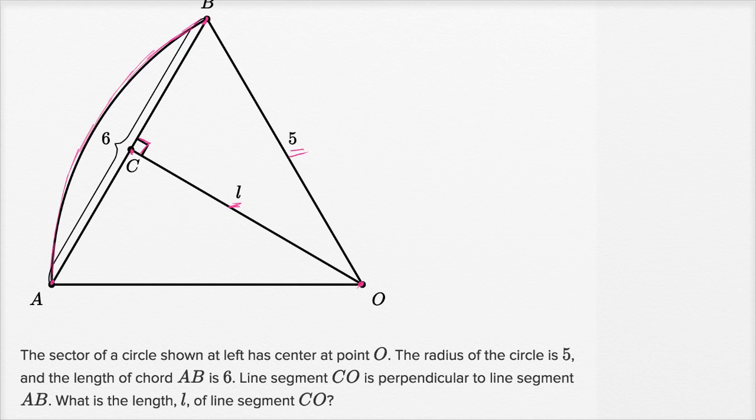So one thing that might immediately jump out at you is we are dealing with a right triangle up here. If you have a right triangle, if you know two of the sides, you can use the Pythagorean theorem to figure out the third side. And so let's see, if we knew what CB was, if we knew the length of segment CB.